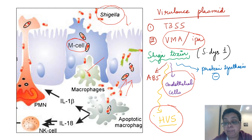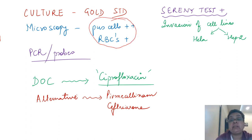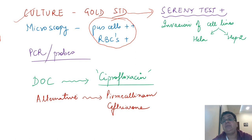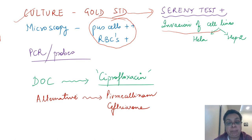For diagnosis of bacillary dysentery, a Gram stain smear of the stool sample will show lots of pus cells and RBCs because it is an invasive diarrhea. Culture is done on selective media like DCA, XLD, HEA, and SSA — that is the gold standard. Once the bacterium is isolated by culture, we prove its invasive nature by the Sereny test — keratoconjunctivitis in the eye of a guinea pig or rabbit — or by invasion of HeLa or HEP2 cell lines. Molecular diagnosis by PCR or nucleic acid probes is also possible. Drug of choice for Shigellosis is ciprofloxacin; alternatives are ceftriaxone or pivmecillinam.